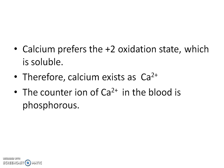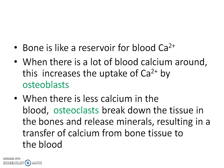The counterion of calcium 2+ in the blood is phosphorus. The bone is like a reservoir for blood calcium 2+. When there's a lot of blood calcium around, this increases the uptake of calcium 2+ by osteoblasts. When there's less calcium in the blood, however, osteoclasts break down the tissue in the bone and release minerals, resulting in the transfer of calcium from the bone tissue to the blood.